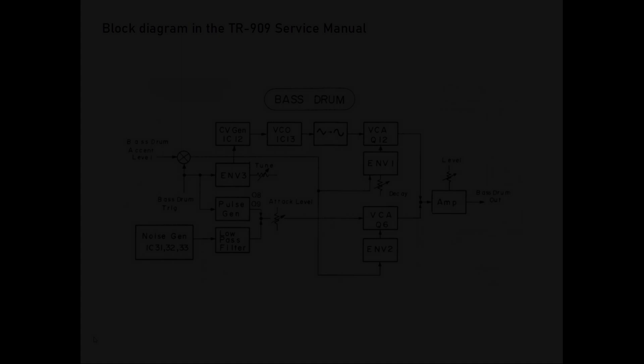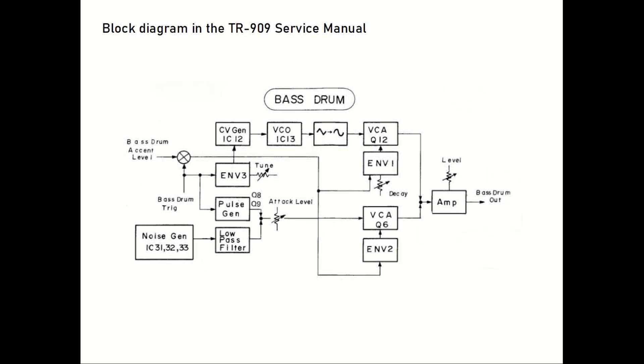The logical place to start is to have a look at the block diagram of the bass drum in the Roland TR-909 service manual. On the left side we have the noise generator that we covered in the previous episode, and we also have the trig and accent inputs connected to this strange circle with a cross in the middle.